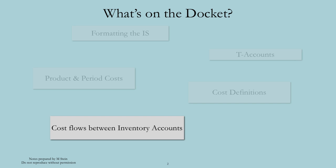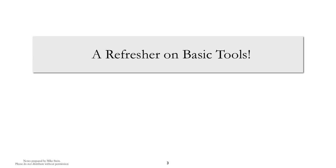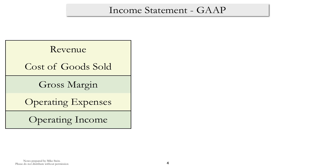I assume that you've seen most of this material in a prior course. However, it is very important that you have a good working knowledge of these topics as we get started. So let's start off with looking at the income statement. The income statement most of you are familiar with is from financial accounting classes, in which we follow generally accepted accounting principles. That gives us a formatting of revenue minus cost of goods sold equals gross margin, subtract off operating expenses, and we're left with operating income.